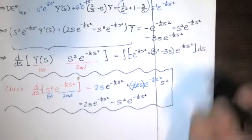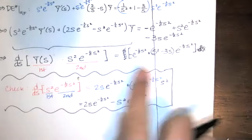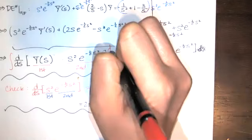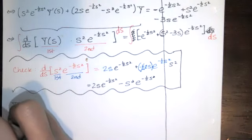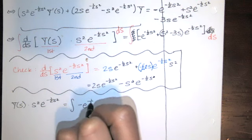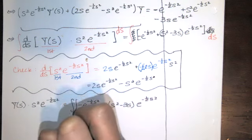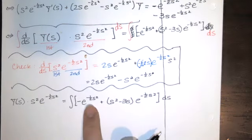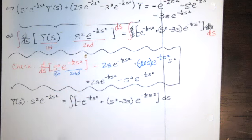Since the derivative of Y(S) times the integrating factor equals the right hand side, we take the anti-derivative of both sides with respect to S. On the left we get Y times the integrating factor. The right side integral looks tough — you might think the e^(−S²/2) term is impossible — but it turns out we can handle it by evaluating the expression using integration by parts.